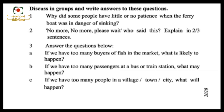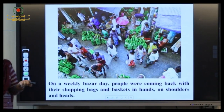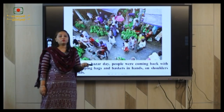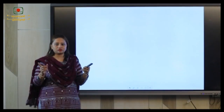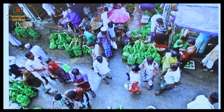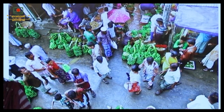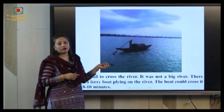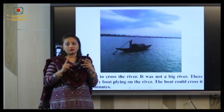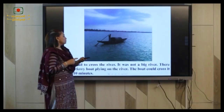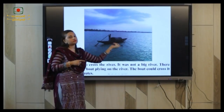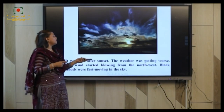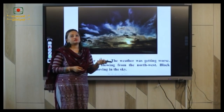This is the bazaar day. In villages, there is one specific day in a week called the bazaar day or 'haat day.' Jamil is the main character of the passage. You can see the villagers buying things from the bazaar. This is the river they need to cross. Jamil was the narrator. There was a ferry boat plying on the river — here is the ferry boat, and it was plying.